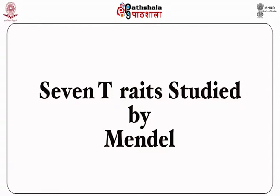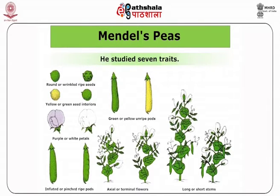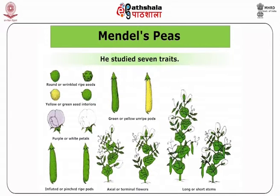Seven traits were studied by Mendel in the pea plant: 1st is seed coat color or flower color — grey and purple; 2nd, seed color — yellow and green; 3rd, seed shape — smooth and wrinkled; 4th, pod color — green and yellow; 5th, pod shape — inflated and pinched; 6th, stem height — tall and short; and 7th, flower position — axial and terminal.